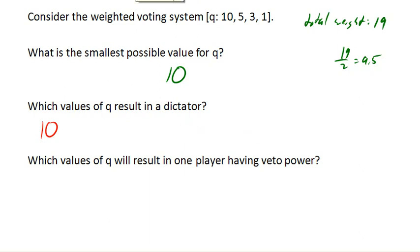What values of the quota result in one player having veto power? This one is a bit trickier. We've got 10, 5, 3, 1. In order to have veto power, one of the players would always have to be part of the coalition in order to reach quota. Let's see. If our quota was 10, then we already know that player 1 is a dictator, so we're not going to concern ourselves about that case.